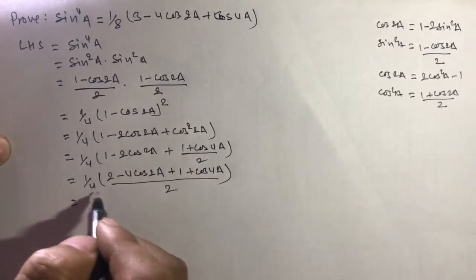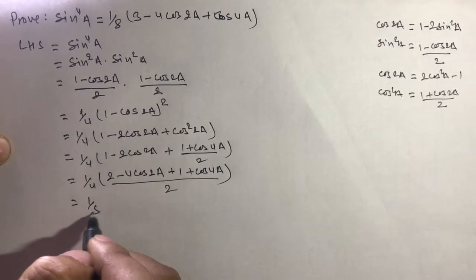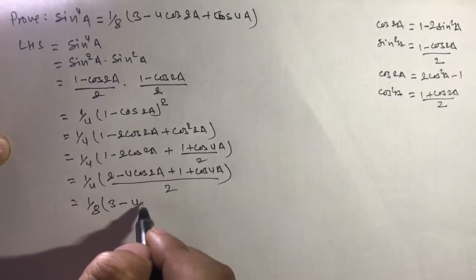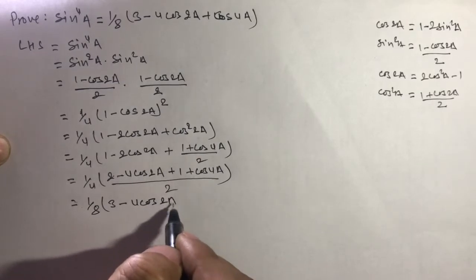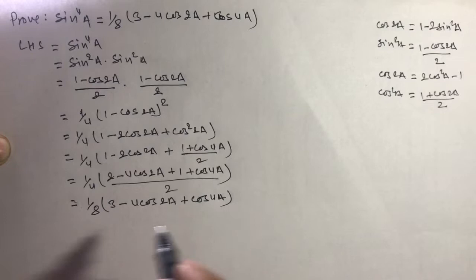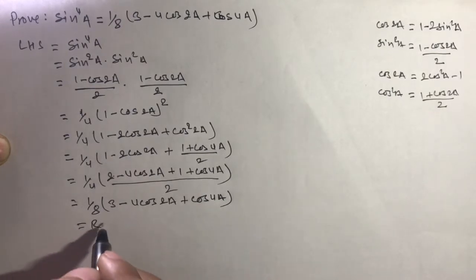1/4 times 1/2 equals 1/8. Simplifying: 1 + 2 + 1 equals 3, giving us 1/8 times (3 - 4cos 2a + cos 4a). This equals RHS.